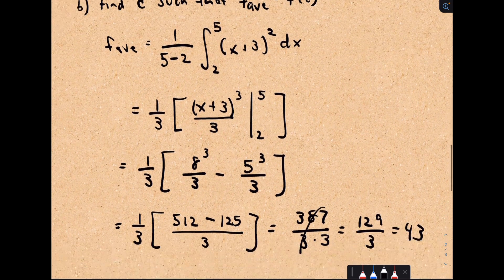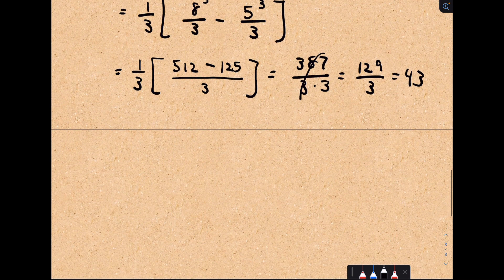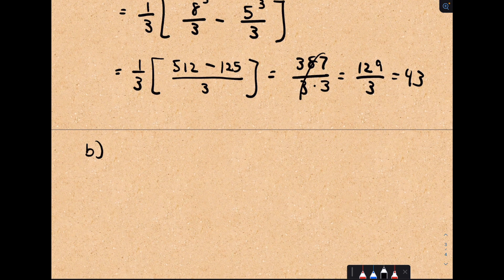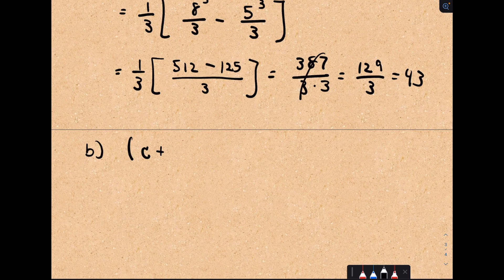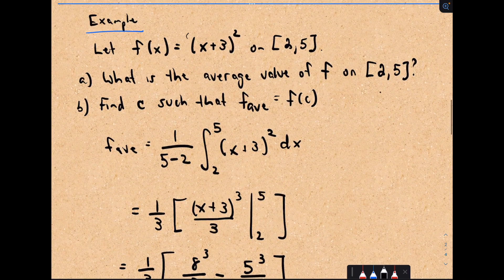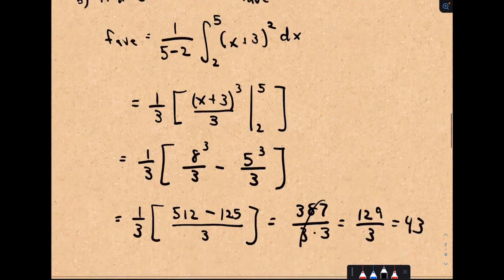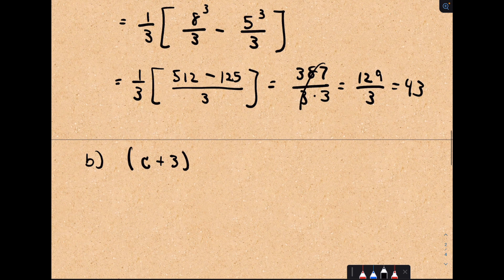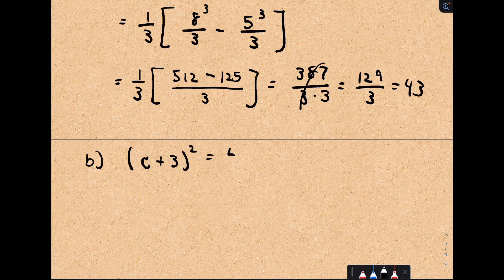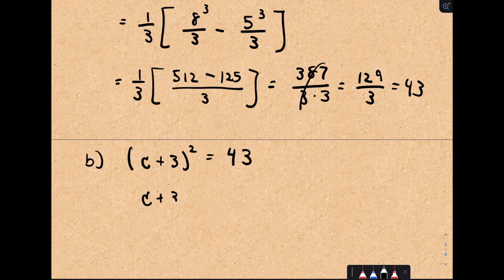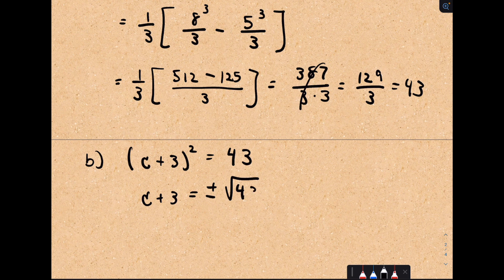Part B finds C so that F of C equals that average value. It says plug C into your function. So instead of x plus 3 squared, we're going to have C plus 3 squared equals the average value, 43. To solve this, we would just take the square root of both sides. So I'd have positive and negative square root of 43.